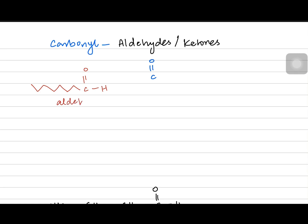Aldehydes are always terminal, so you never have to mention their position. The name of aldehydes ends with the suffix 'AL'. For example, a one-carbon aldehyde would be called methanal, and a two-carbon aldehyde would be called ethanal. This helps distinguish between alcohols, which end in 'OL', and aldehydes, which end in 'AL'.